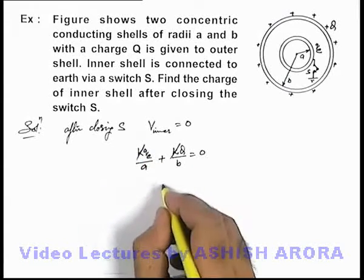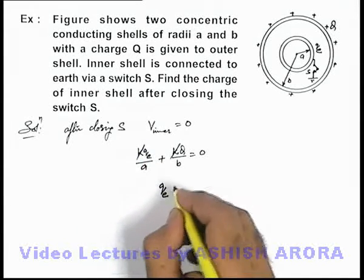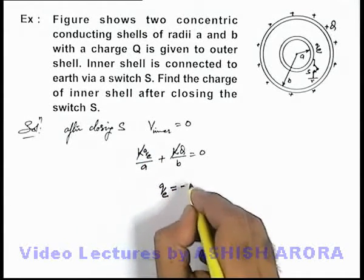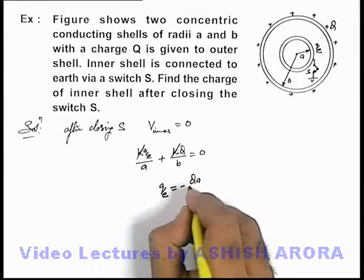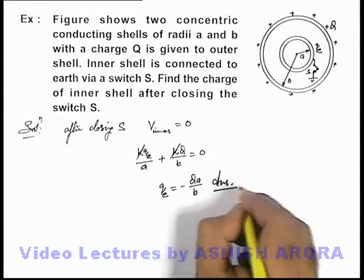Here, k gets cancelled out and the value of charge on the inner shell can be written as negative Qa/b. That will be the answer to this problem.